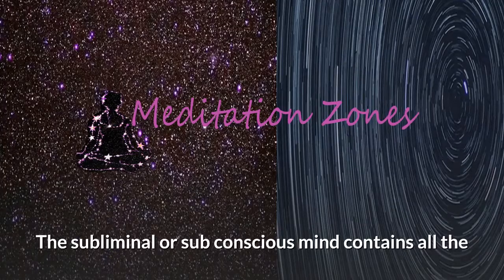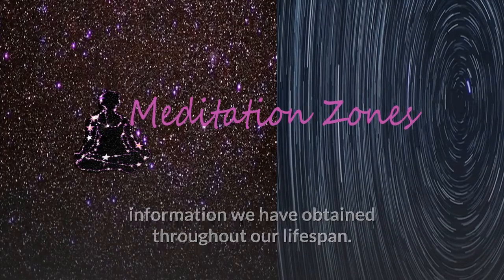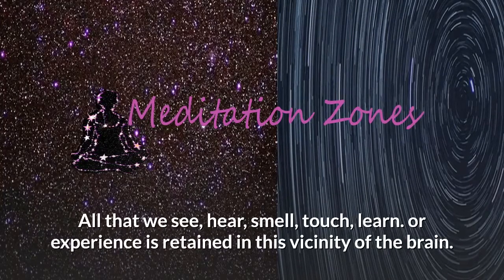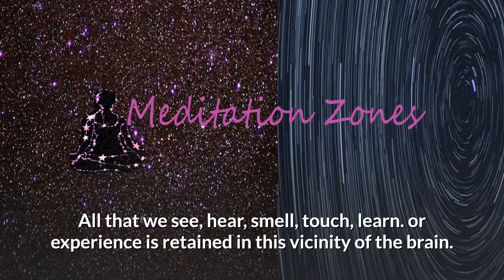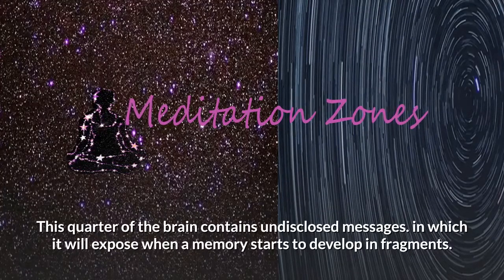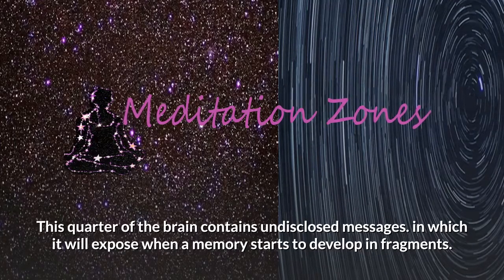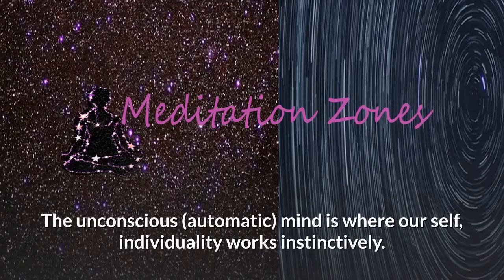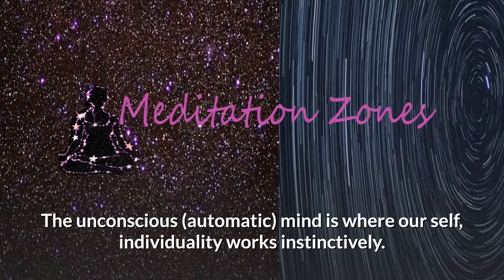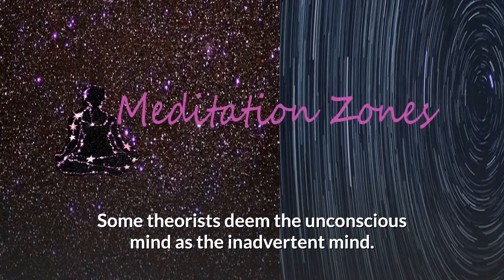The subliminal or subconscious mind contains all the information we have obtained throughout our lifespan — all that we see, hear, smell, touch, learn, or experience is retained in this vicinity of the brain. This part of the brain contains undisclosed messages which it will expose when a memory starts to develop in fragments. The unconscious automatic mind is where our self-individuality works instinctively. Some theorists deem the unconscious mind as the inadvertent mind.